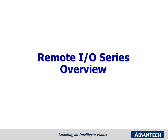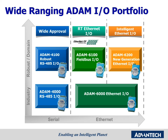Now let's see the Remote I/O overview. Here is the product segmentation of the ADEM series. We can categorize ADEM into different groups. In serial modules, we have ADEM 4000 and ADEM 4100 series. In Ethernet modules, we have 6000, 6100, and 6200 series. Because of the wide range of ADEM I/O modules provided, we can support different applications for customers. Customers can choose the suitable model based on communication interface, environment needs, and system structure.